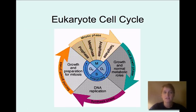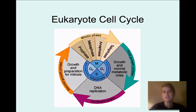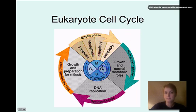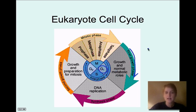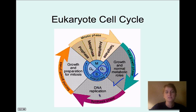Now let's talk about the eukaryote cell cycle. Eukaryotic cell division is more complicated because eukaryote cells have more organelles that have to be copied, and they have more DNA — those chromosomes with lots of different genes all have to be copied correctly. We start with G1, the first growth phase, where the cell is growing, doing normal metabolism, and reaching the correct size. After this growth phase, there's a checkpoint where the cell checks that everything is okay before moving on to the S phase — the synthesis phase — where the DNA is copied.